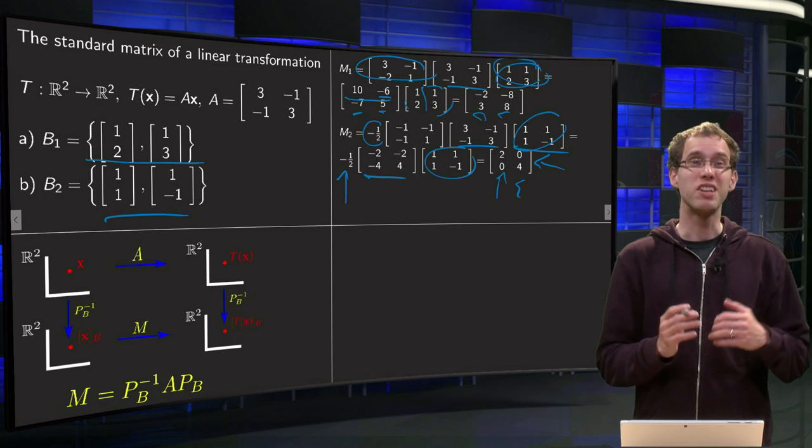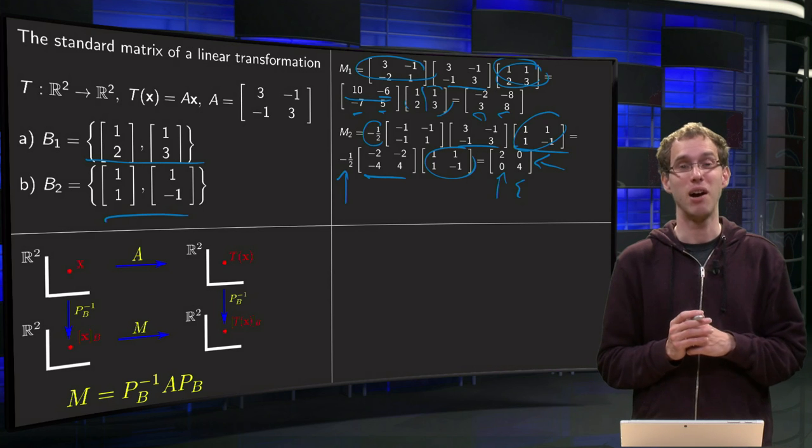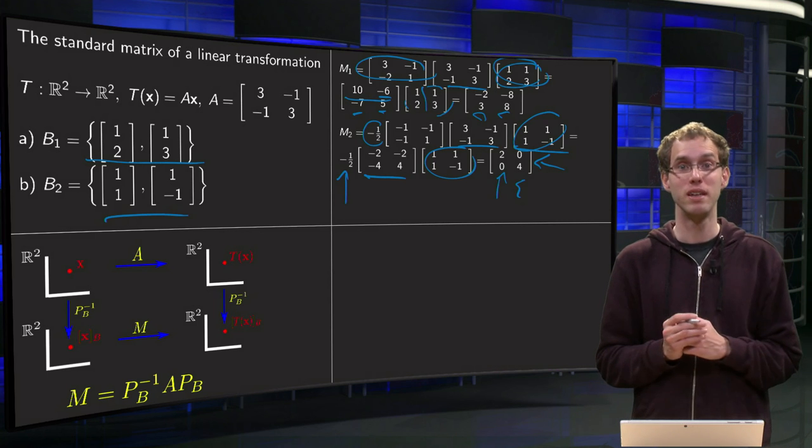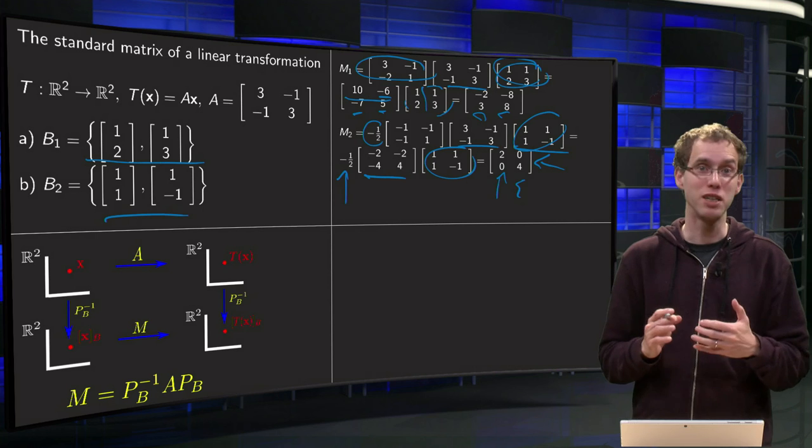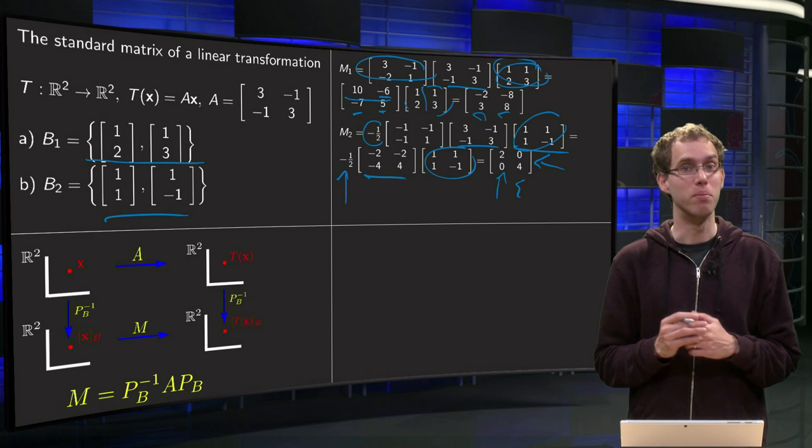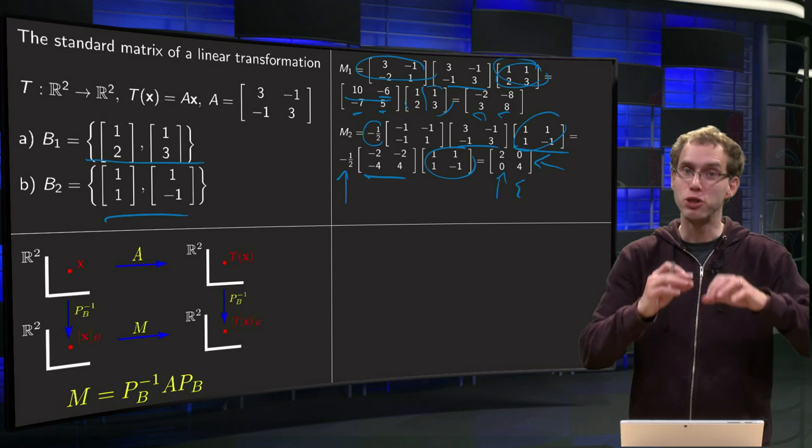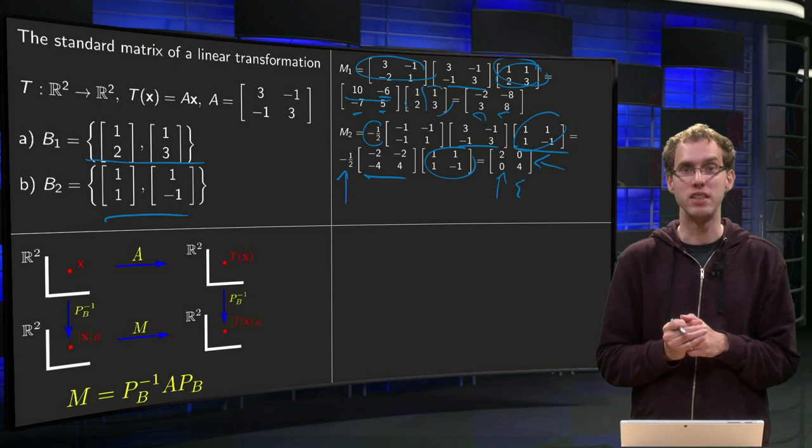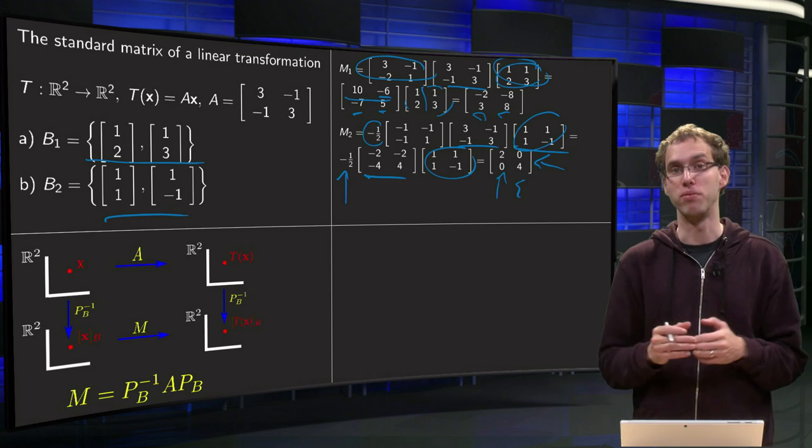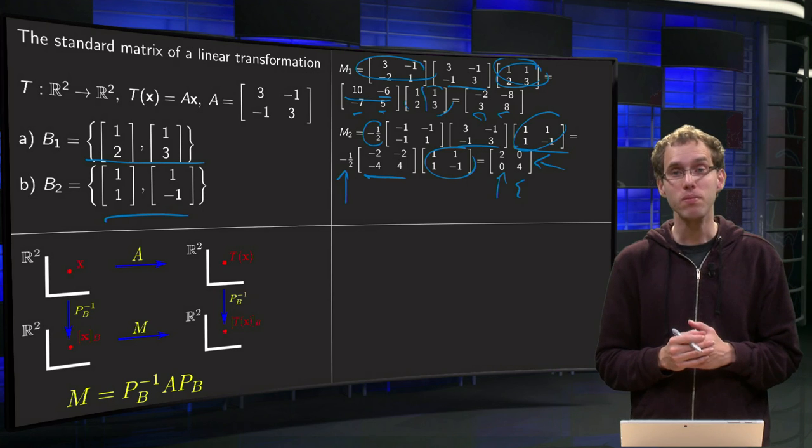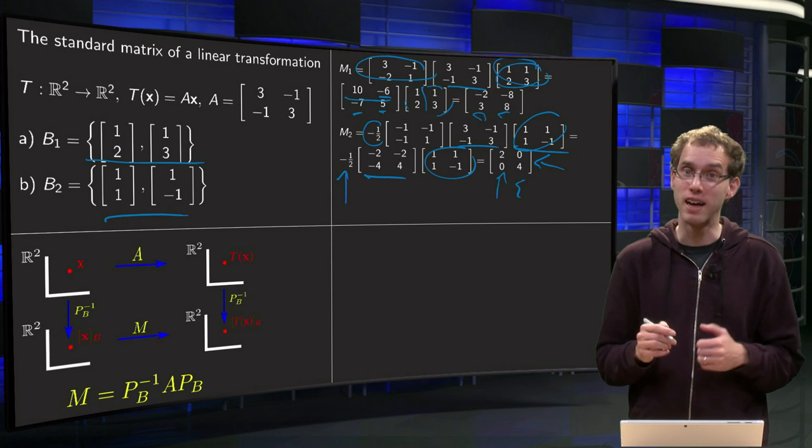So what do we see? With respect to this other basis, our transformation has suddenly become diagonal. And that's nice, because diagonal matrices are much easier to handle than non-diagonal ones. Now choosing this other basis has given our same transformation, but now implemented by a diagonal matrix.